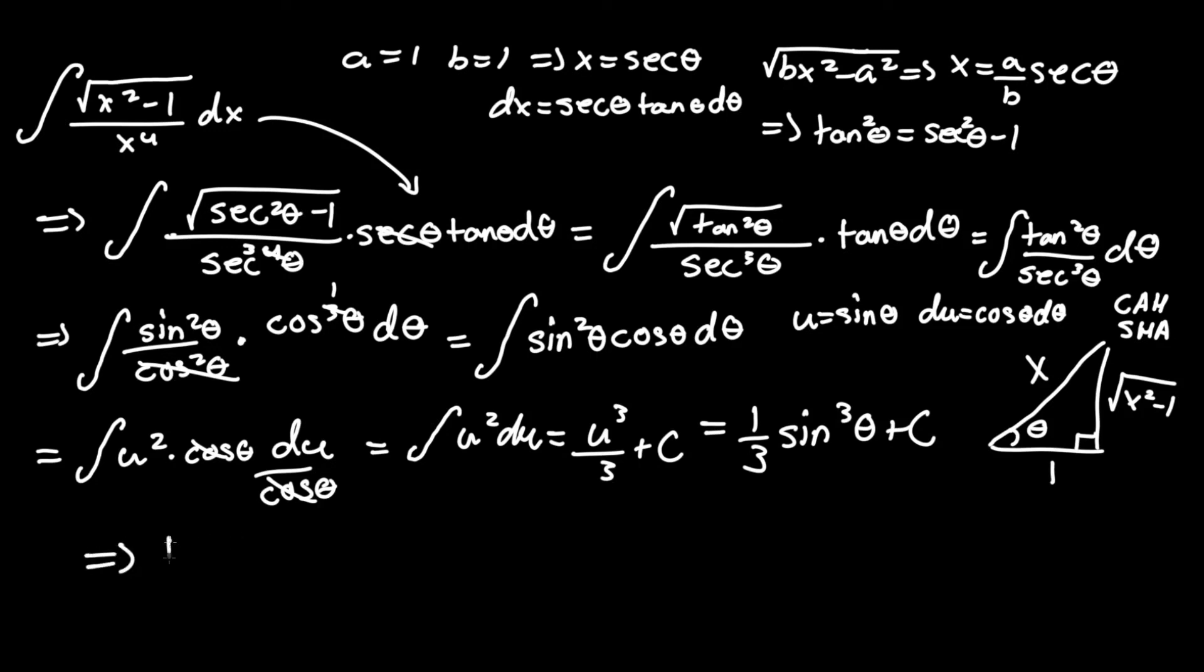This will be 1 third. We know that sine theta, in this case, is the square root of x squared minus 1. So let me put a parenthesis, square root of x squared minus 1, over the hypotenuse of x.